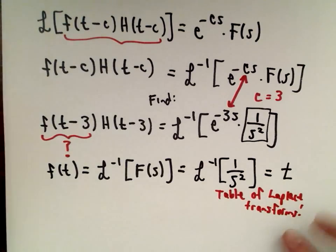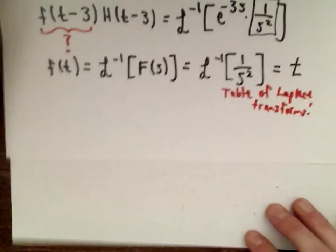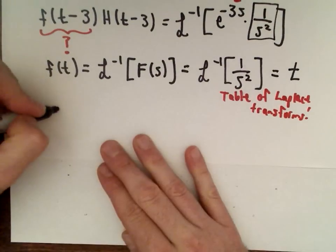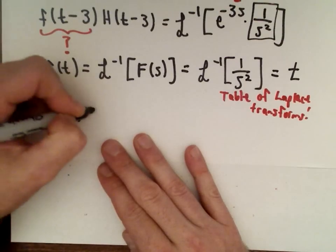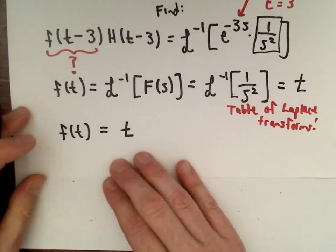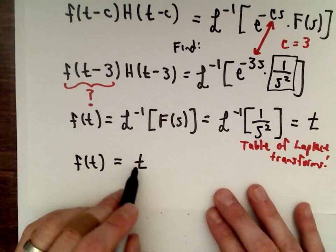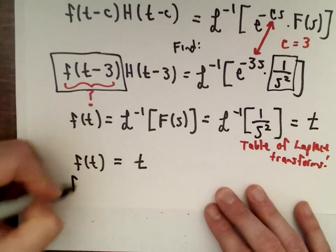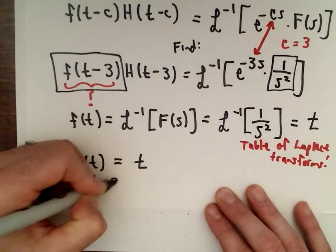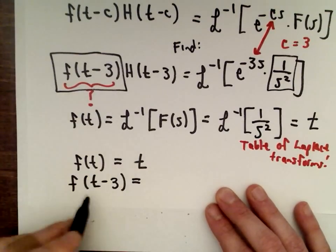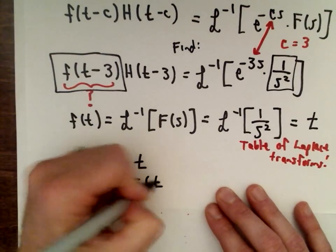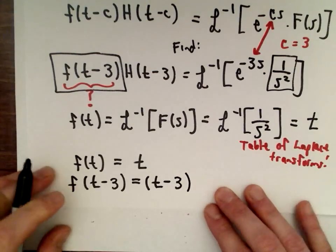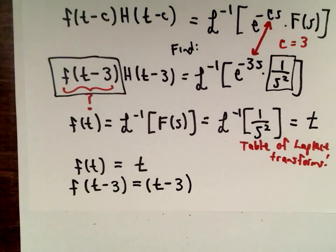We're really almost done, we're pretty much there. These ones aren't too bad. Our function f(t) is just actually equal to t. Well, if f(t) equals t, if we replace our t with t minus 3, well f(t-3) is just going to equal t minus 3. And now we have our solution.